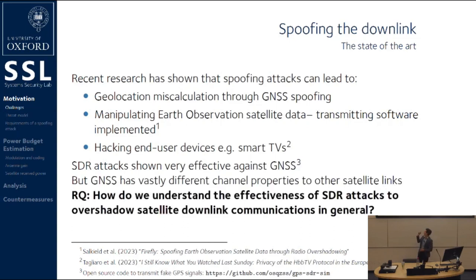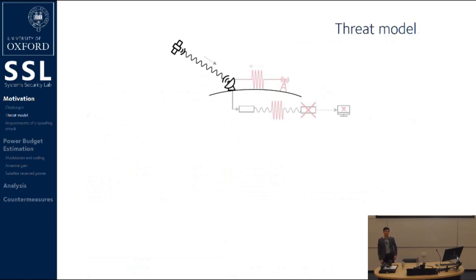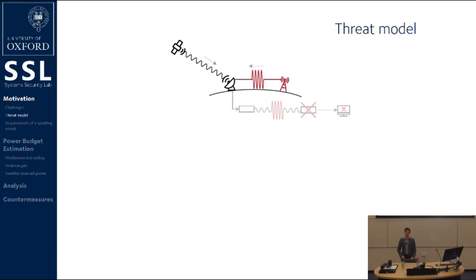Therefore, we consider the following research question: how do we understand the effectiveness of software-defined radio attacks to overshadow satellite downlink communications in the general case? In order to dig into this problem, we need to define a threat model. The basic idea is that whenever the satellite is over the horizon, it's transmitting something. Even if there's no data to transmit, it's transmitting filler frames. That means an overshadowing adversary needs to overshadow the existing signal — they need to send out a signal loud enough to compete with the existing signal on the channel and win, so that their signal is decoded instead of the victim signal.